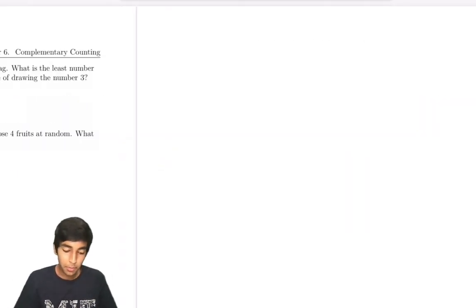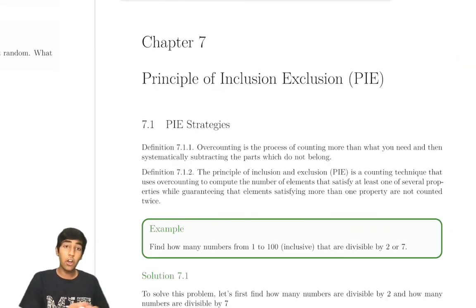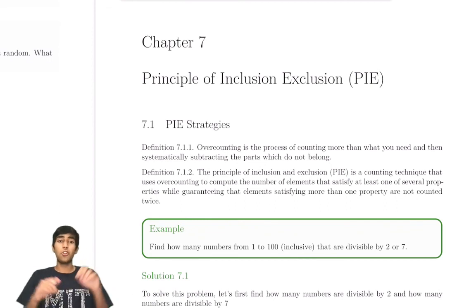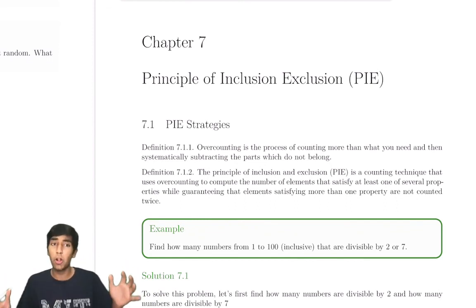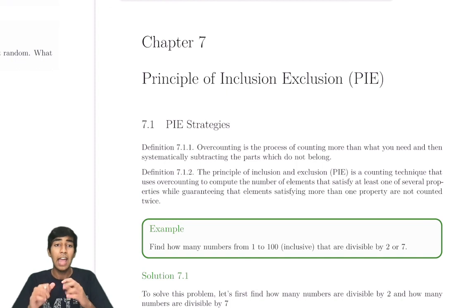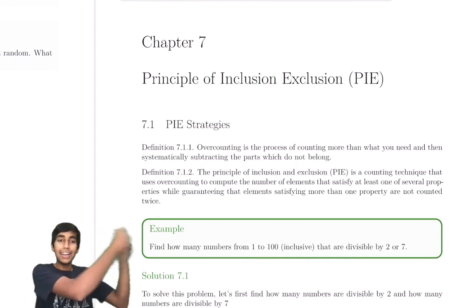Now let's move on to the principle of inclusion and exclusion. Not always can you just find the complement — sometimes you have overlapping things you have to subtract. For this, we use PIE. Let's explore PIE right here.